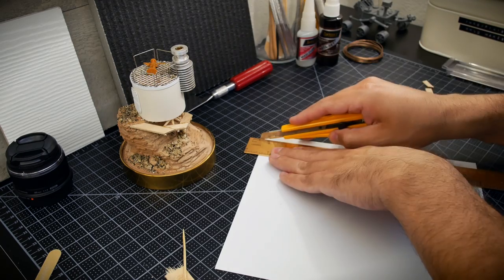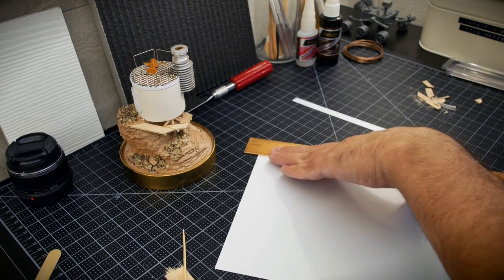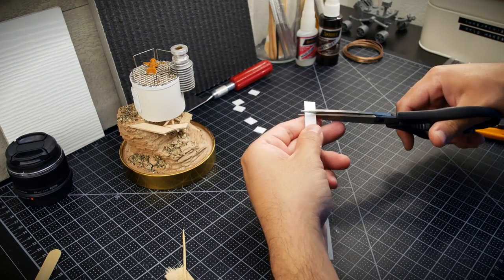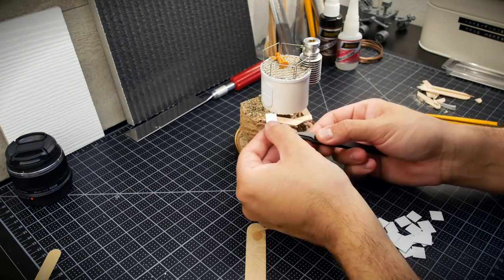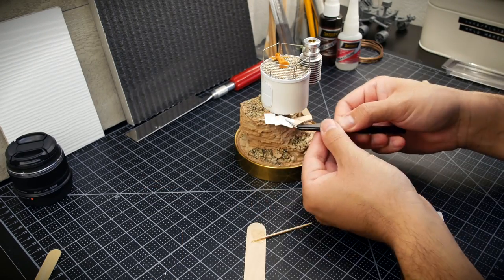Moving on, I created some sheets that would cover the top of the ramp. Again, using styrene, I cut a strip into smaller pieces and then glued these down to the support structure using superglue.